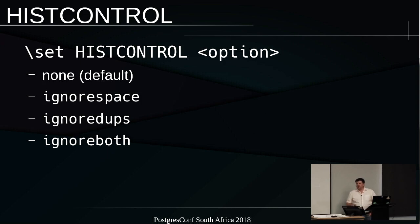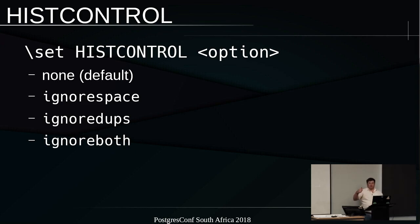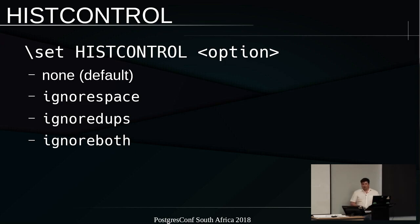History control — the default option is none. There are options: ignore space, ignore dupes, and ignore both. Ignore space means if you put a space in front of the query, it doesn't save it to your history file. Ignore dupes means if you repeat the same query over and over, it won't add it to the history file again — it'll end up with just one entry. Ignore both combines those two options.